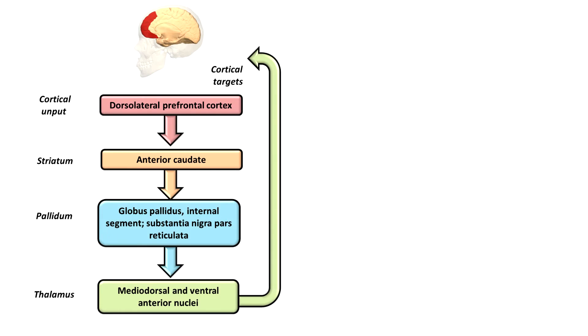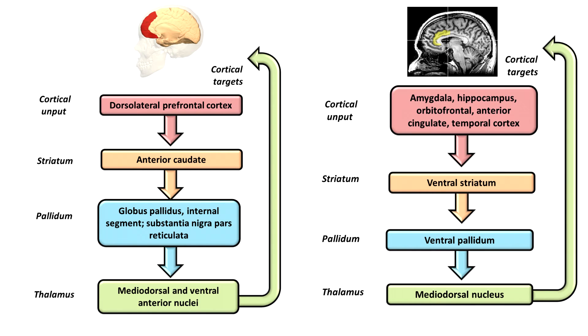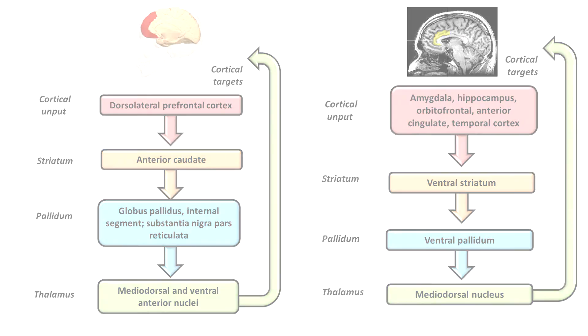Two non-motor loops of the basal ganglia are: the prefrontal loop, important for initiation and termination of cognitive processes; and the limbic loop, important for emotional and motivational behavior.